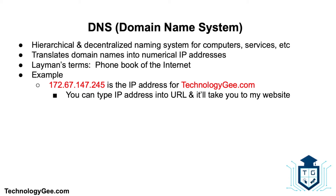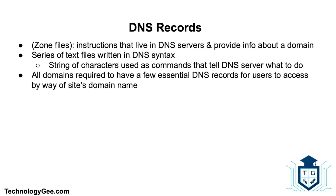An example: the IP address 172.67.147.245 is associated with my website technologyg.com. If you type that IP address into the URL it will take you straight to Technology G. As a word of caution, my website is behind a content delivery network or CDN, so accessing it directly by IP address will present an error stating direct IP access is not allowed — you can only access it by typing in the name technologyg.com.